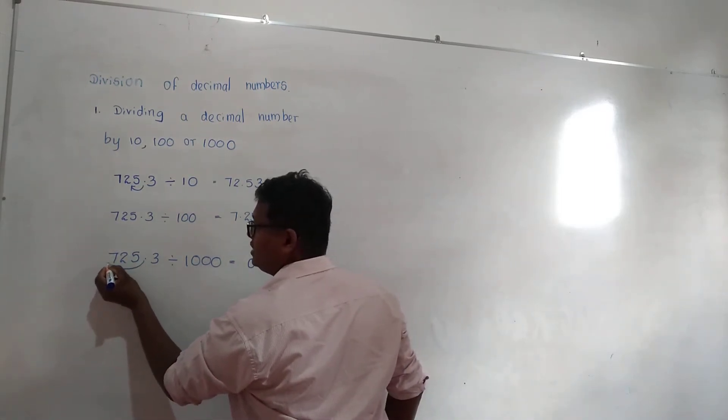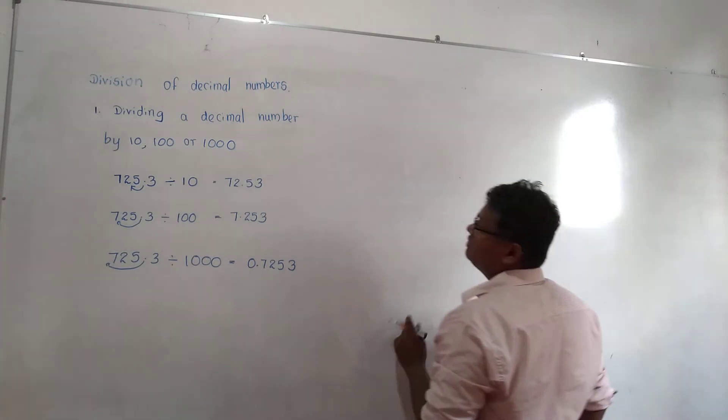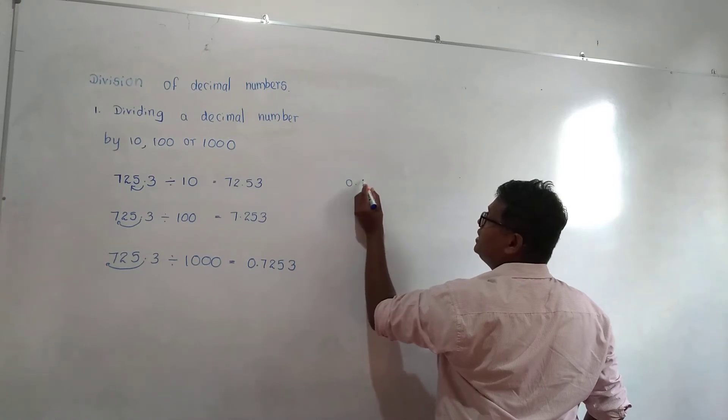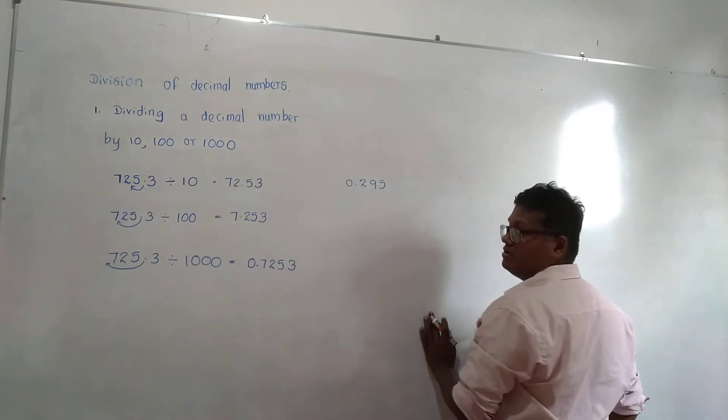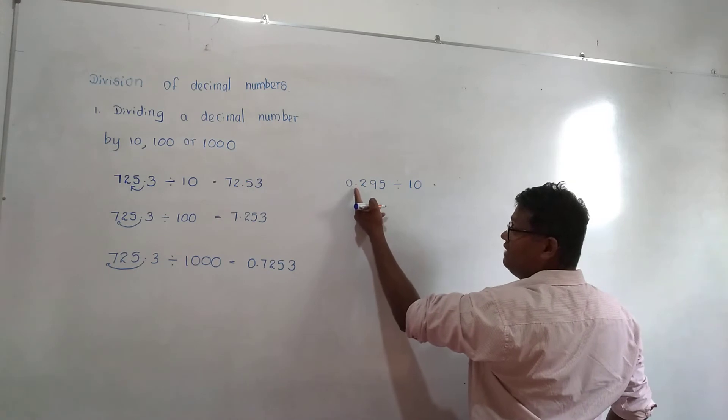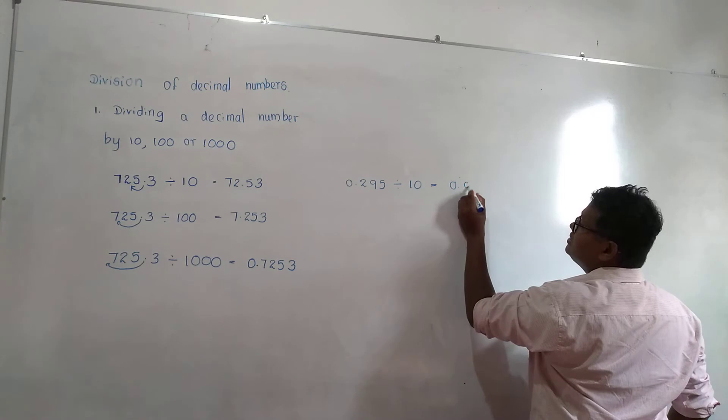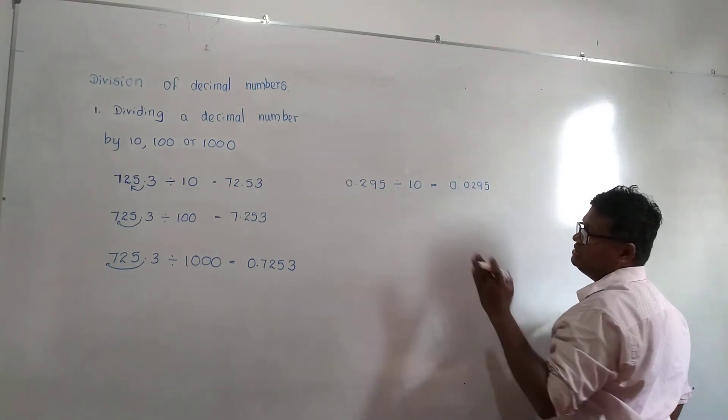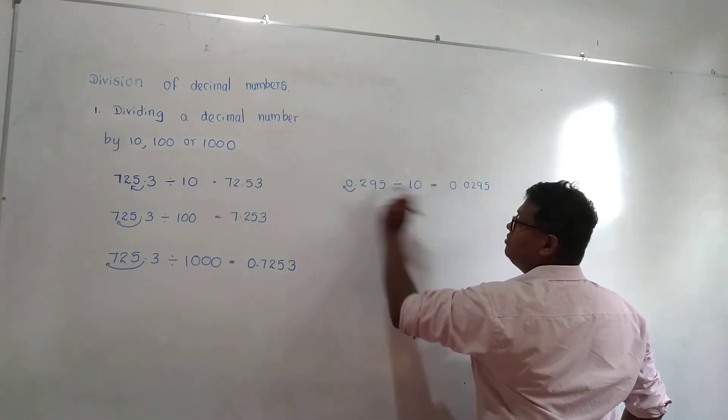Decimal point will go forward three times, here two times. Another one: 0.295 divided by 10. What is the answer? Decimal point again will go forward: 0.0295.